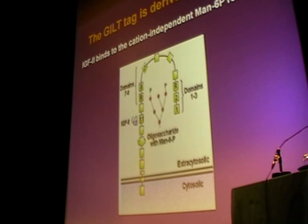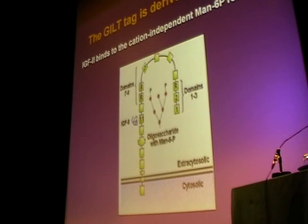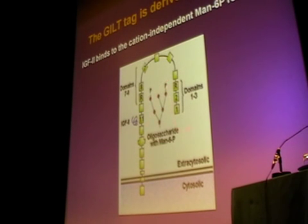The mannose-6-phosphate receptor is a bifunctional receptor that has domains that bind the mannose-6-phosphate on the oligosaccharides of lysosomal enzymes, but in addition it has a domain that binds IGF-2. It binds both of these ligands, endocytoses them, and delivers them both to the lysosome — the lysosomal enzymes for function and IGF-2 for degradation.